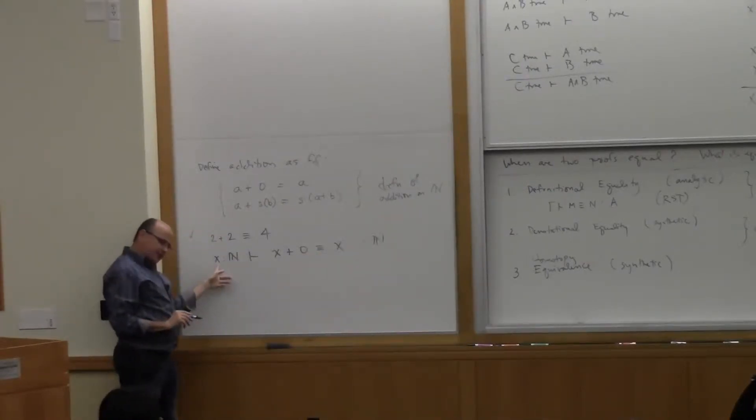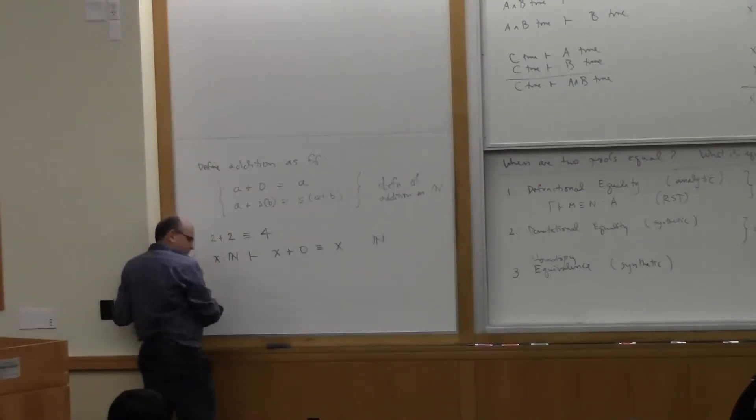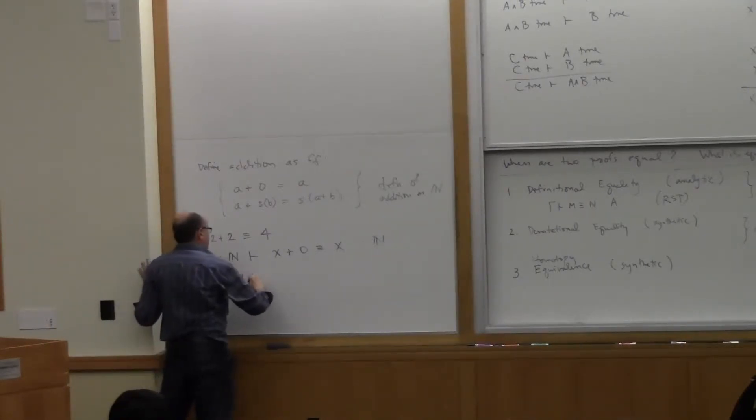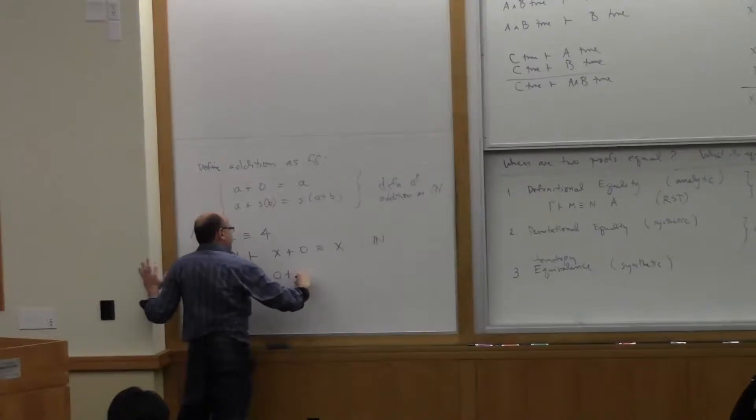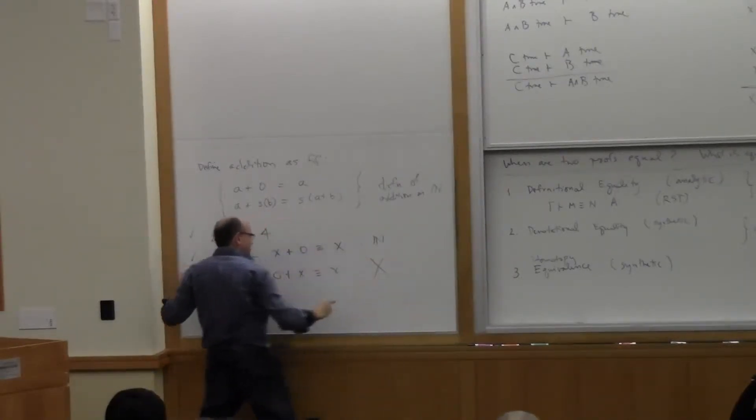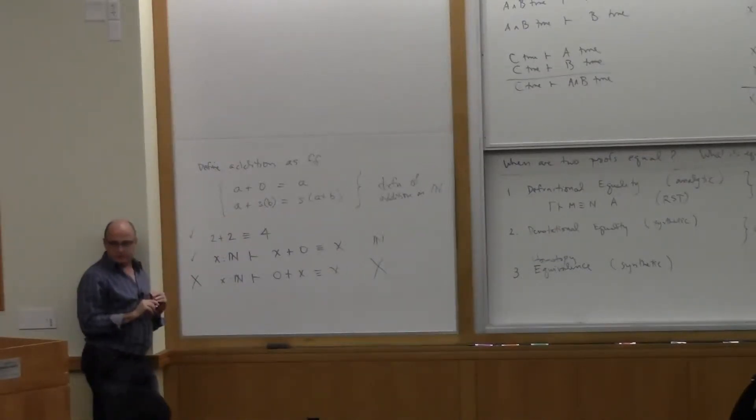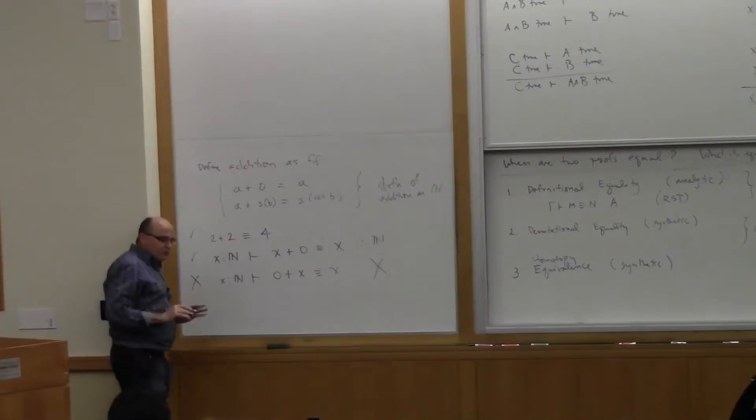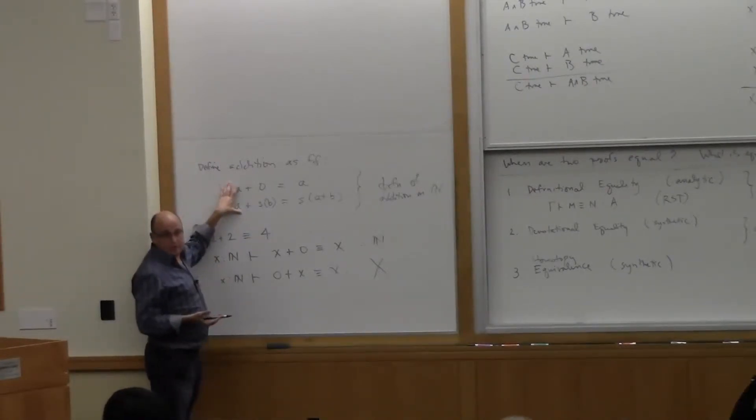I deliberately chose x to be a variable here for the reason it will become apparent in the next line. However, it is not the case that if I have x in n, that 0 plus x is definitional equivalent to x. This is not the case. And the reason is, the notion of definitional equivalence is the equivalence relation that's induced by the definitions only.